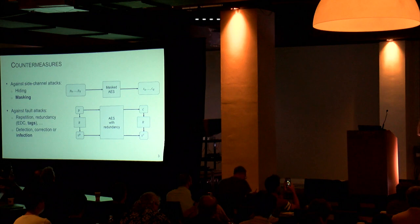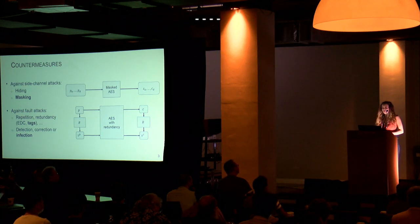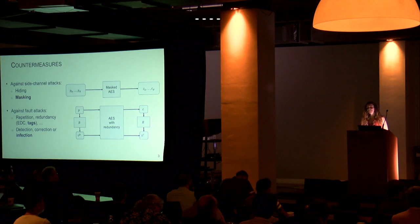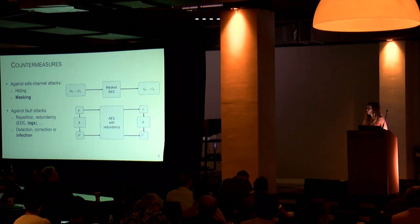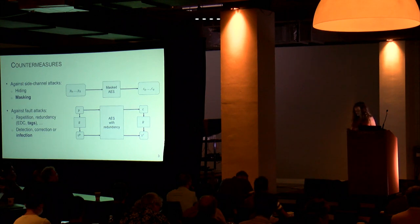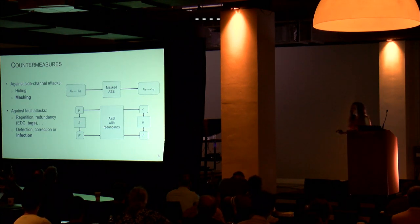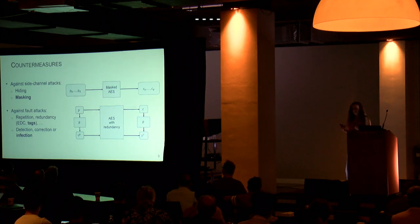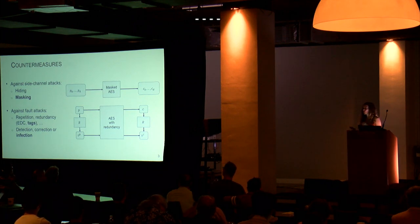The community has been working hard to create countermeasures against these attacks. Against side-channel attacks, two important countermeasures are hiding and masking. In this talk I'm only going to talk about masking. Then against fault attacks, you need some kind of redundancy. Repetition is quite common, but also error-detecting codes, or in our case, tags.